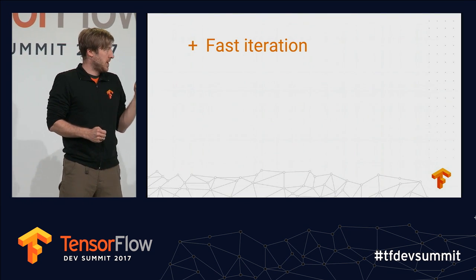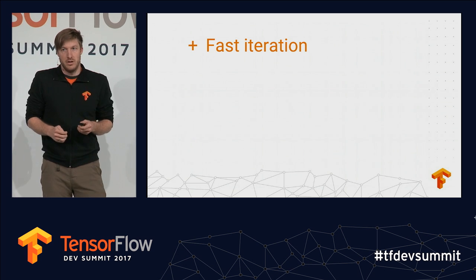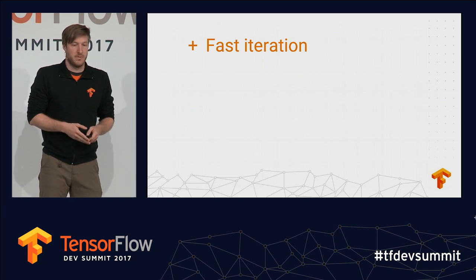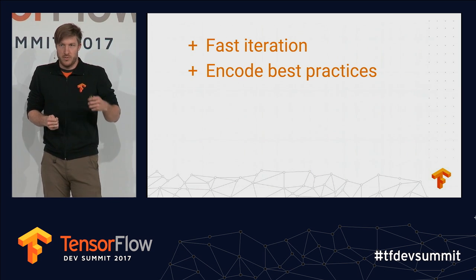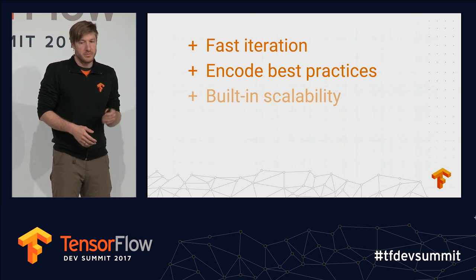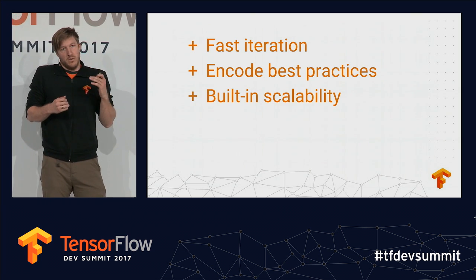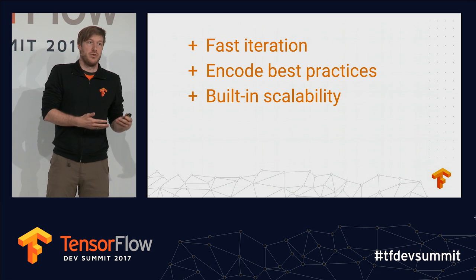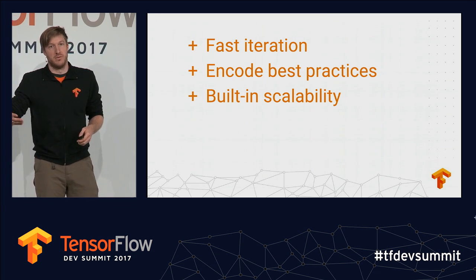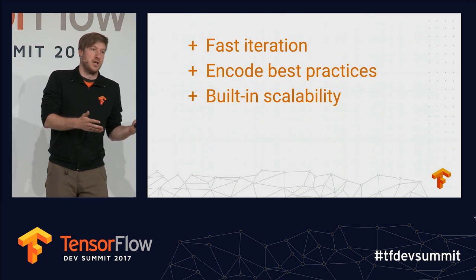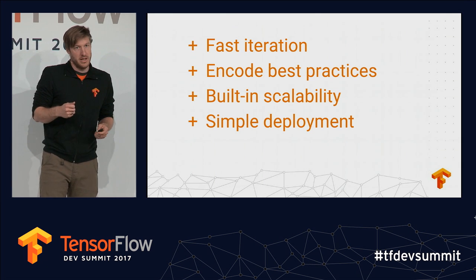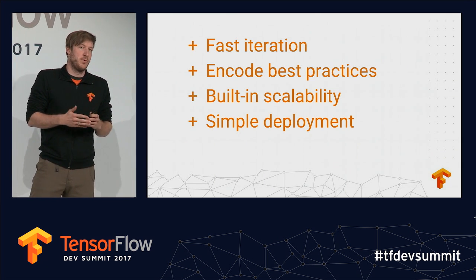What that should give you is you will be able to iterate faster over model architectures, or in general things that you may want to build with TensorFlow. Those higher-level abstractions will allow us to encode best practices for you, so it's harder to make mistakes. And we'll be able to provide primitives that make it really easy for you to write code that's scalable right out the door — you don't have to re-engineer it once you realize a single machine or single GPU is not enough.